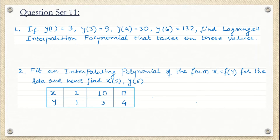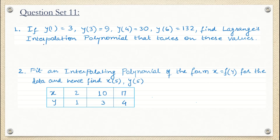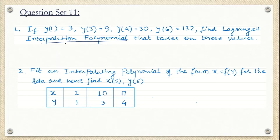So the very first question says that if y1 is 3, y3 is 9, y4 is 30 and y6 is 132, find Lagrange's interpolation polynomial that takes on these values. They have given us four data sets.